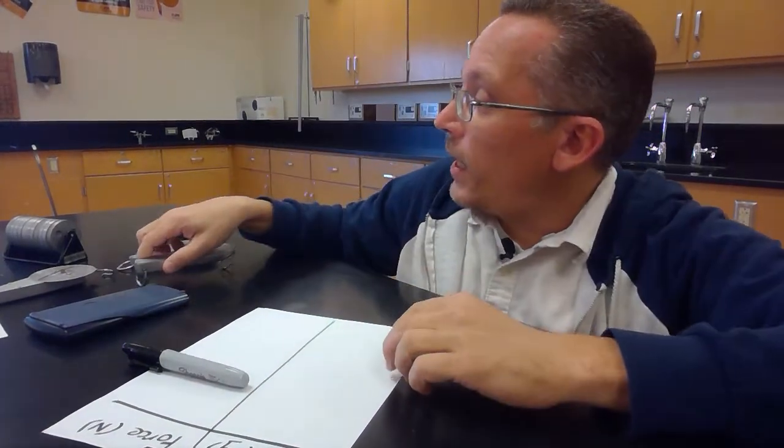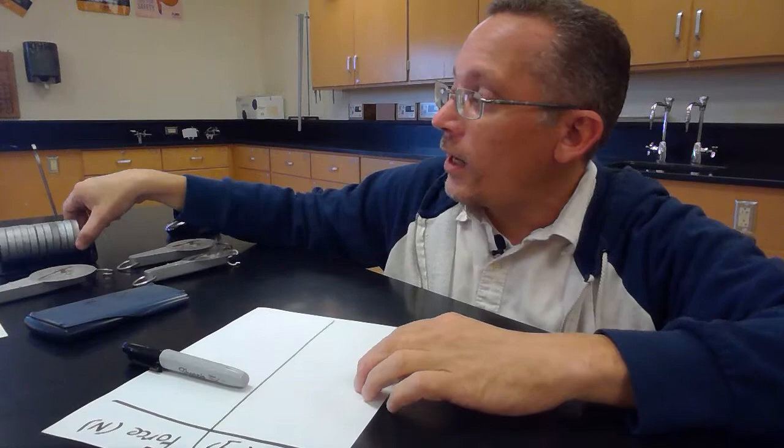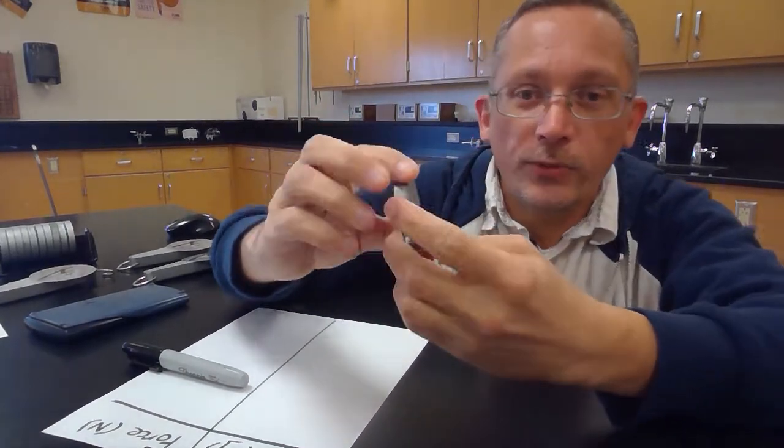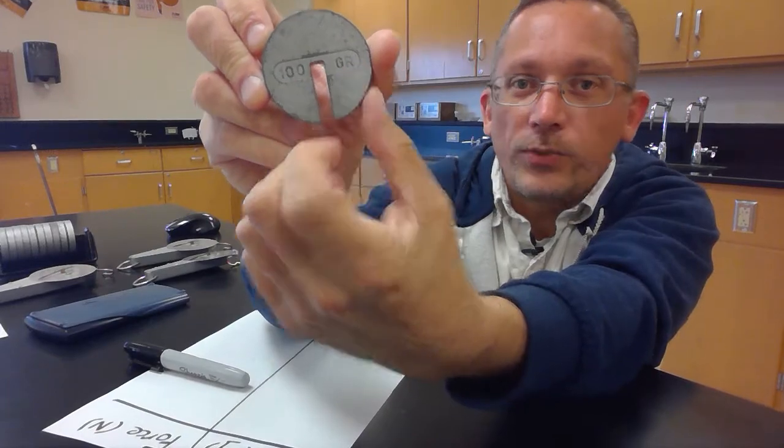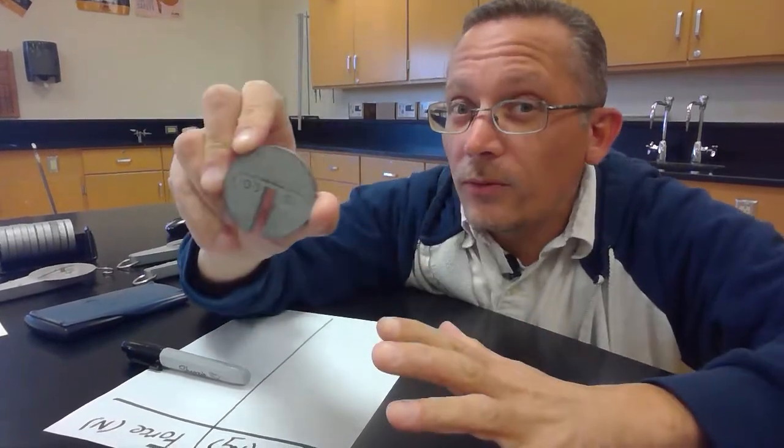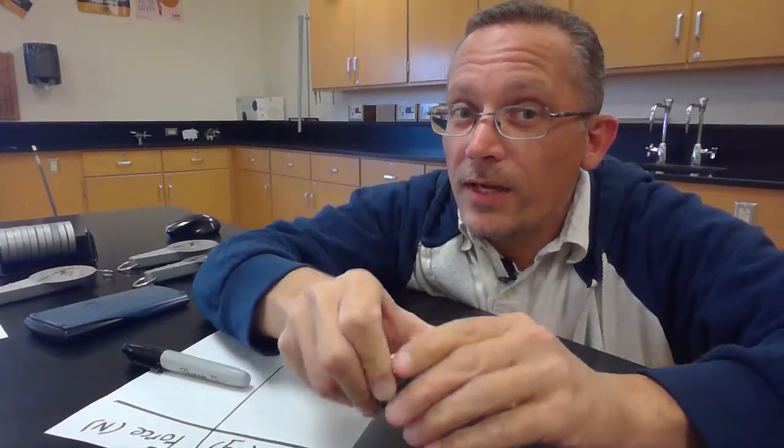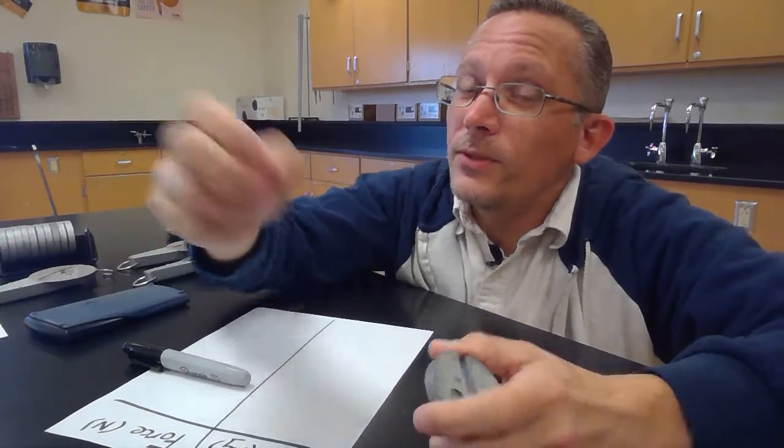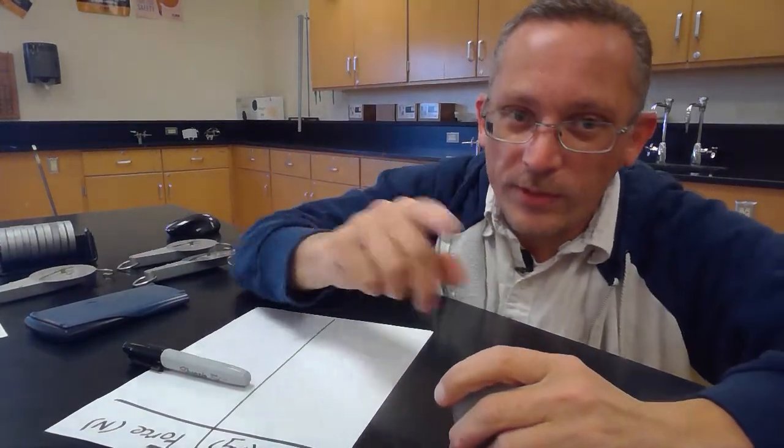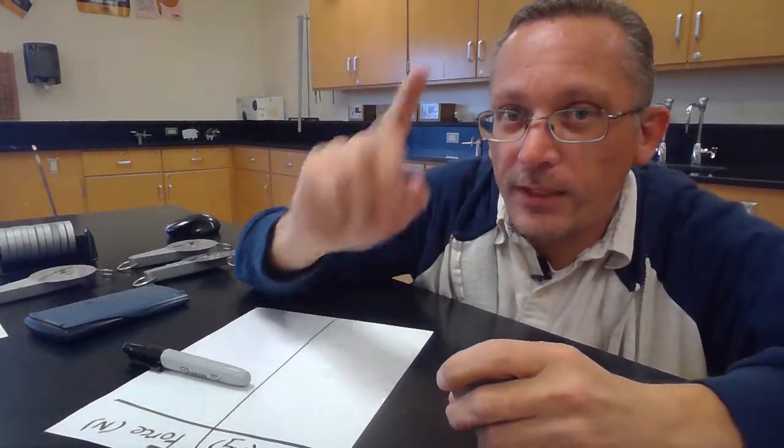Okay now the weights that I'm going to hang off of here are these little slot masses. Each one of these is a hundred grams, and it says on there a hundred grams on each one. Now I'm not going to want the masses in grams, I'm going to want the masses in kilograms, which is okay. All you have to do is divide it by one thousand, because there are a thousand grams in a kilogram.